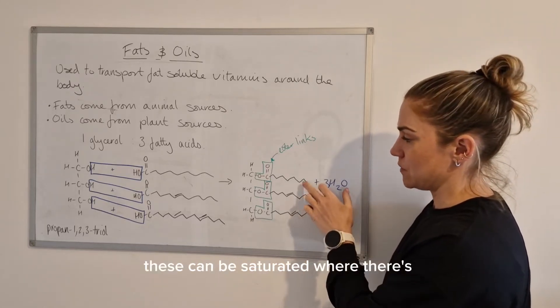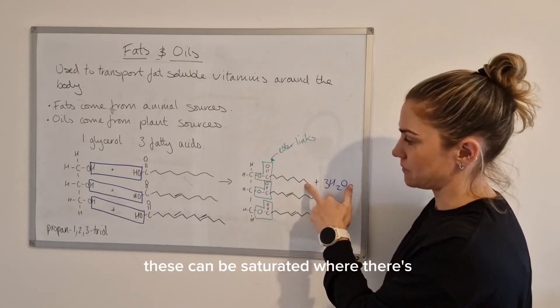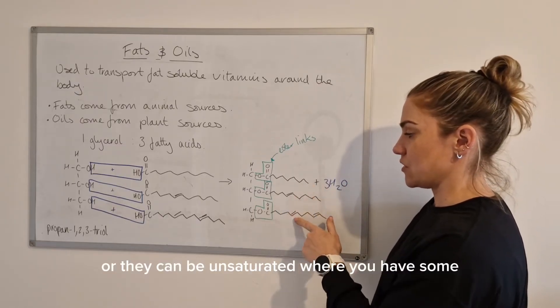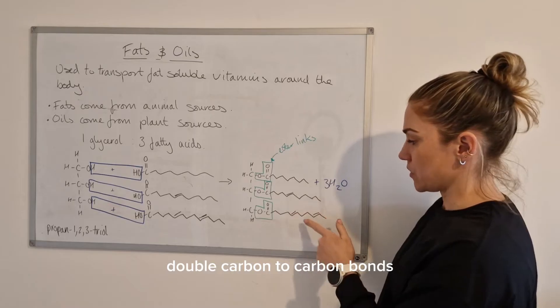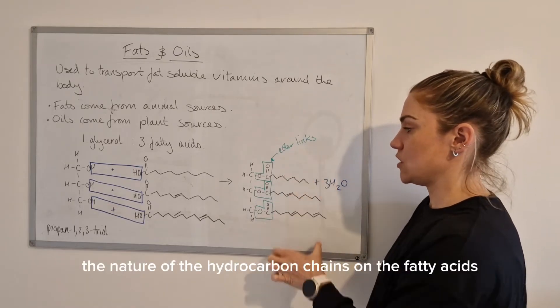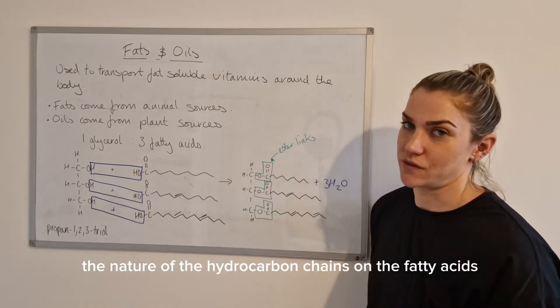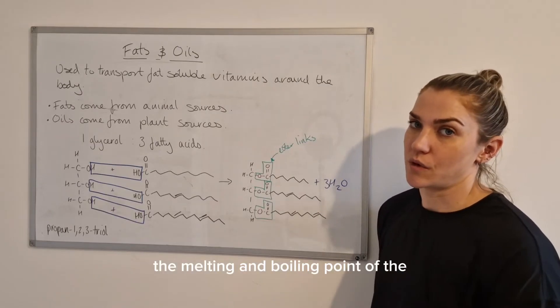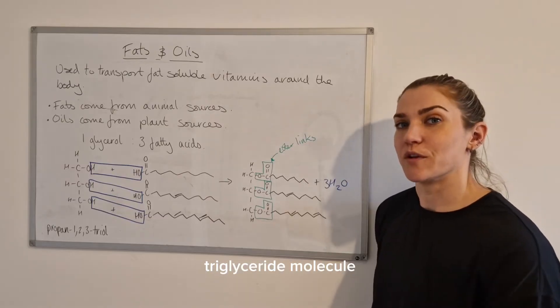Like I said before, these can be saturated where there's no double carbon to carbon bonds, or they can be unsaturated where you have some double carbon to carbon bonds. What we're going to look at now is how the nature of the hydrocarbon chains on the fatty acids will determine the melting and boiling point of the triglyceride molecule.